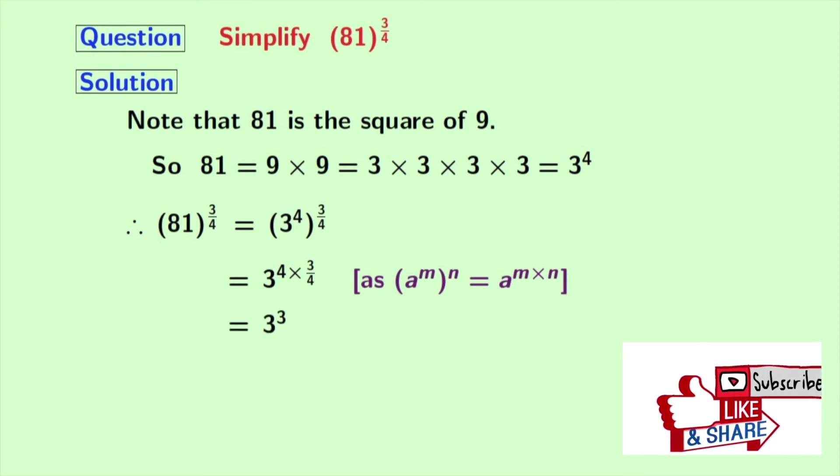In the power, 4 gets cancelled and we have 3 power 3 which is equal to 27. And this is our final answer. Thank you for watching.